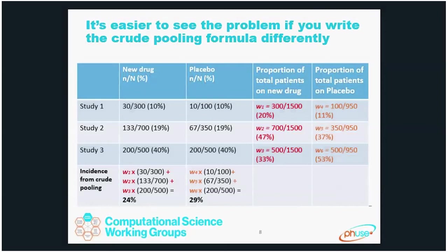Looking at the new drug arm, the last study — which was clearly in a different patient population because it had a much higher event incidence — is only getting 33% of the weight, while in the placebo arm it's getting 53% of the weight. The 10% study is also getting more weight on the new drug arm than in the placebo arm. All of those together make it look, when you pool them, like the placebo has a higher incidence than the new drug.